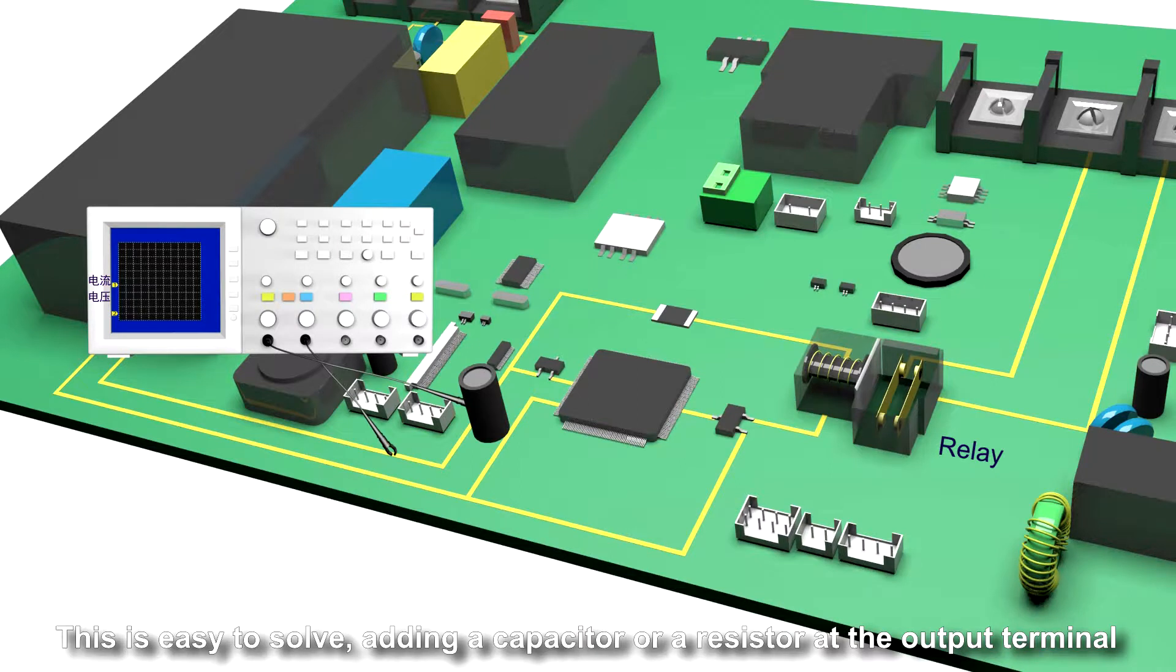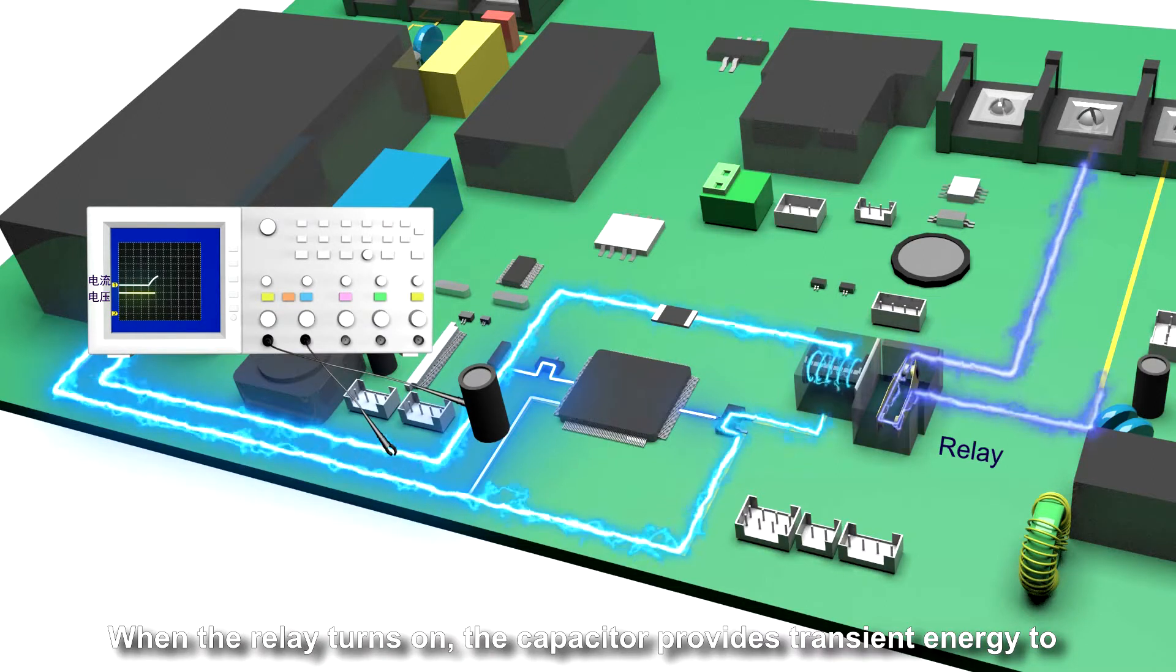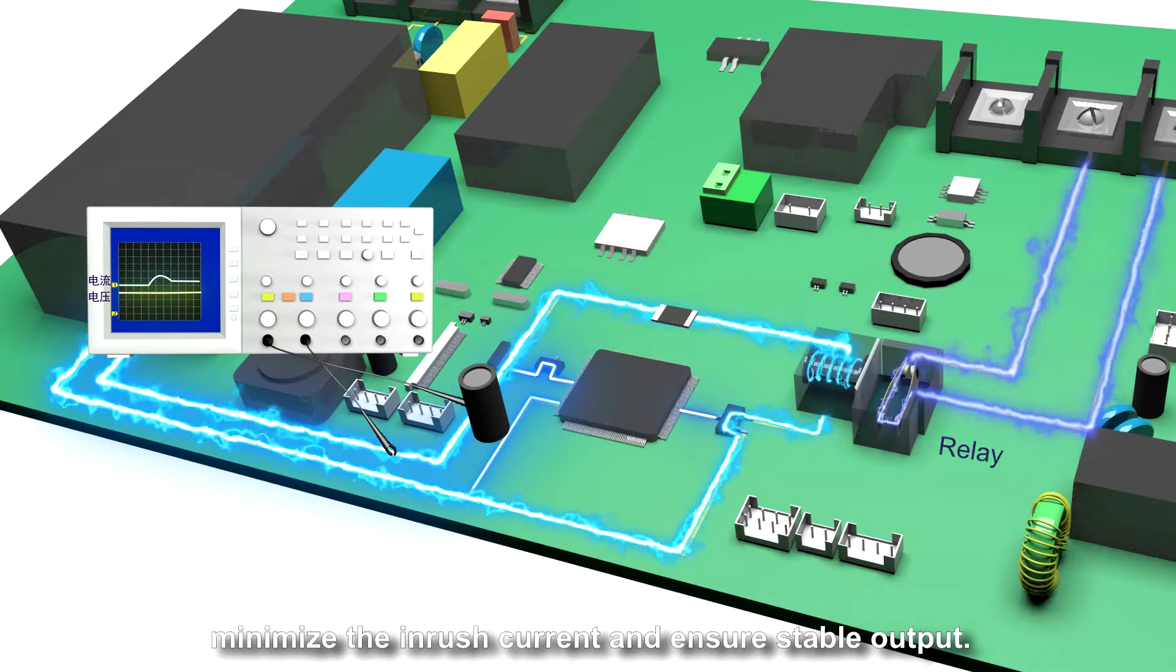This is easy to solve by adding a capacitor or a resistor at the output terminal to absorb the inrush current. When the relay turns on, the capacitor provides transient energy to minimize the inrush current and ensure stable output.